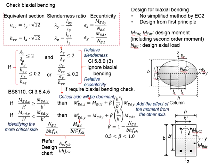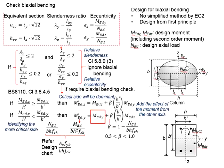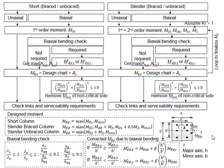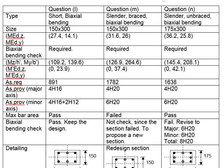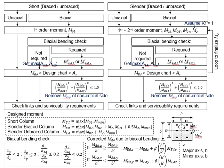If the major axis is the critical side, the calculations of M'_Ed will be on the basis of the major axis plus the effects of the other side. Similarly, if you find that the minor axis will be dominant, then you will take the minor axis moment plus the influence of the other axis. This leads to a new M_Ed, known as M'_Ed. This step is very important. As you can see from the design calculation steps in our previous example, there is a significant increase from M_Ed to M'_Ed. You cannot simply use the M_Ed, as this would have underestimated the loading acting onto the column.